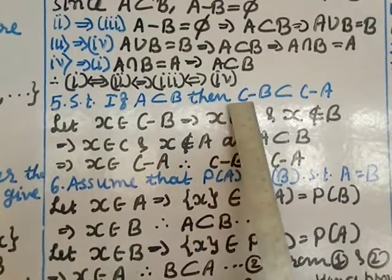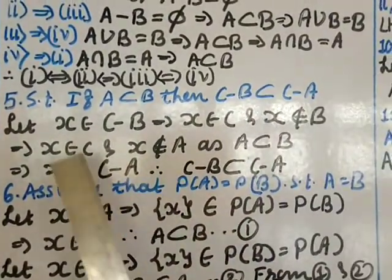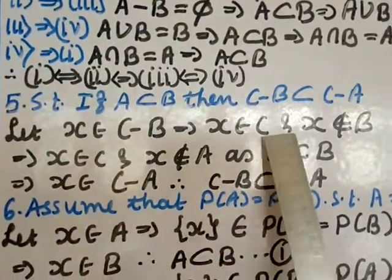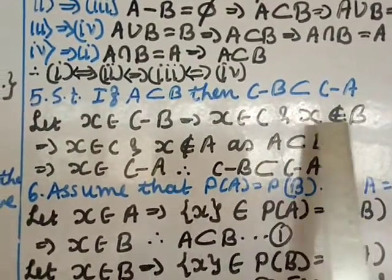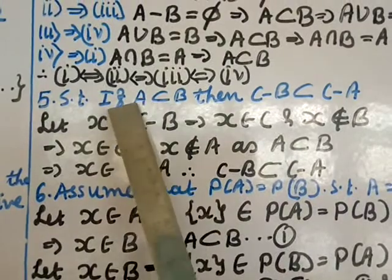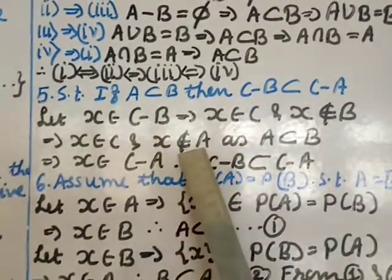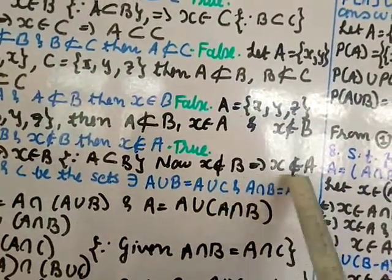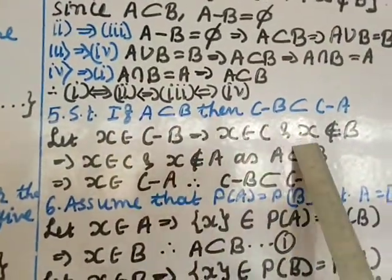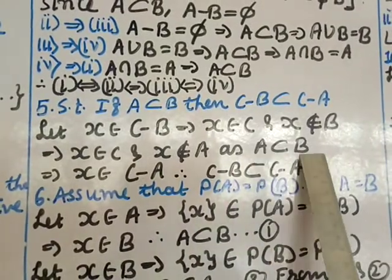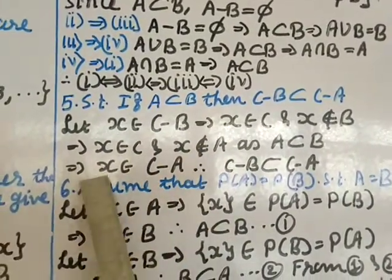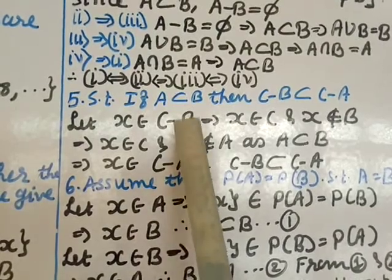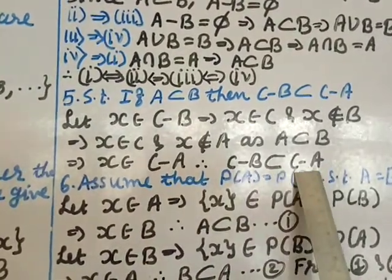Question number five: show that if A ⊆ B then C - B ⊆ C - A. Proof: let x ∈ C - B, which means x ∈ C and x ∉ B. Since A ⊆ B, if x ∉ B then x ∉ A. So x ∈ C and x ∉ A, which means x ∈ C - A. Therefore x ∈ C - B implies x ∈ C - A, so C - B ⊆ C - A.